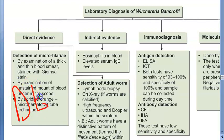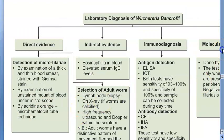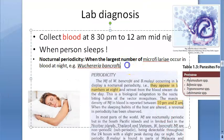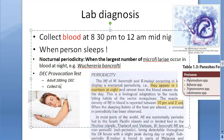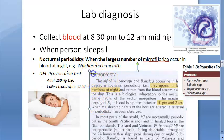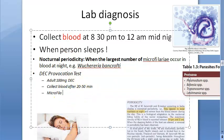There is also the DEC provocation test: a small dose of diethylcarbamazine (DEC) induces microfilaria to appear in peripheral blood even during daytime. Blood samples can be collected 20 to 15 minutes after administration of 100 mg of DEC to adults. This is also part of the lab diagnosis.